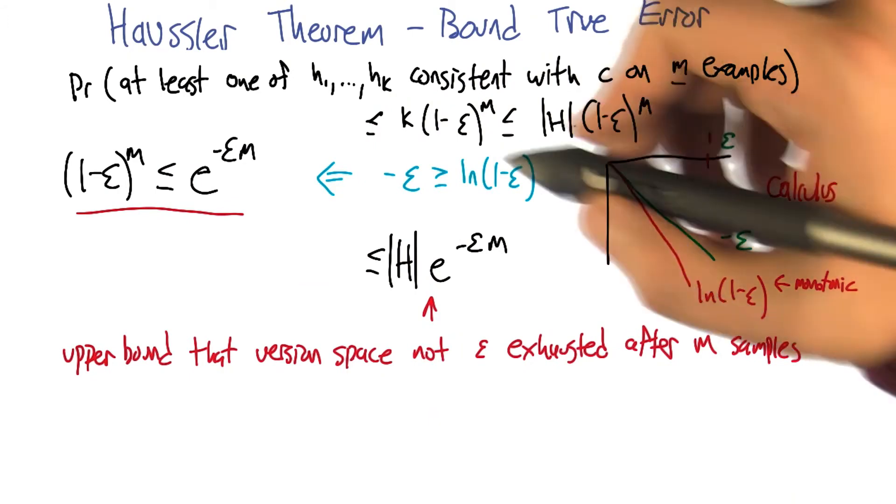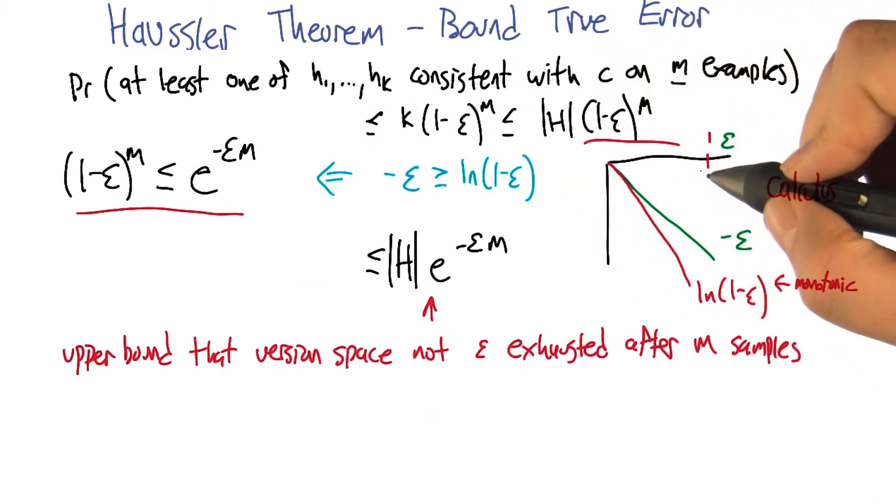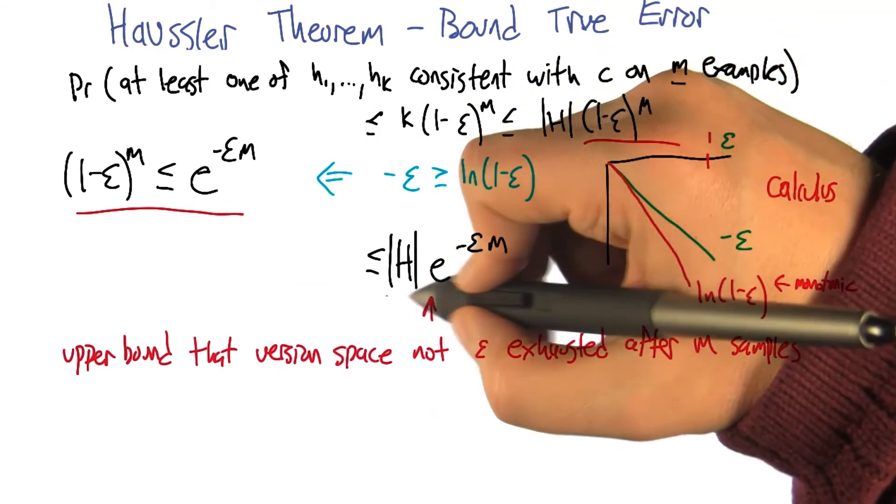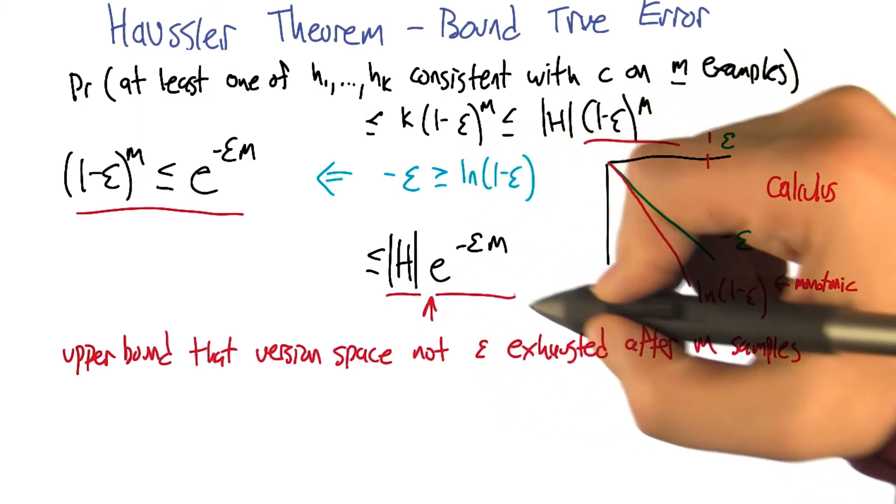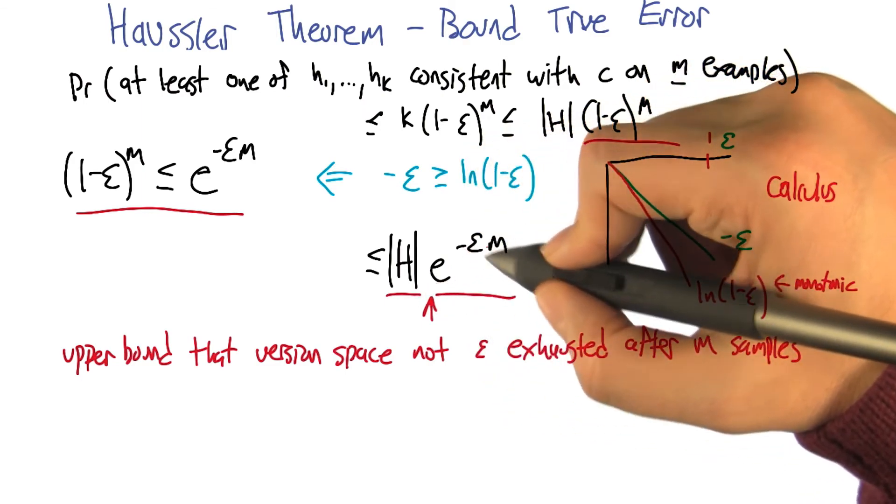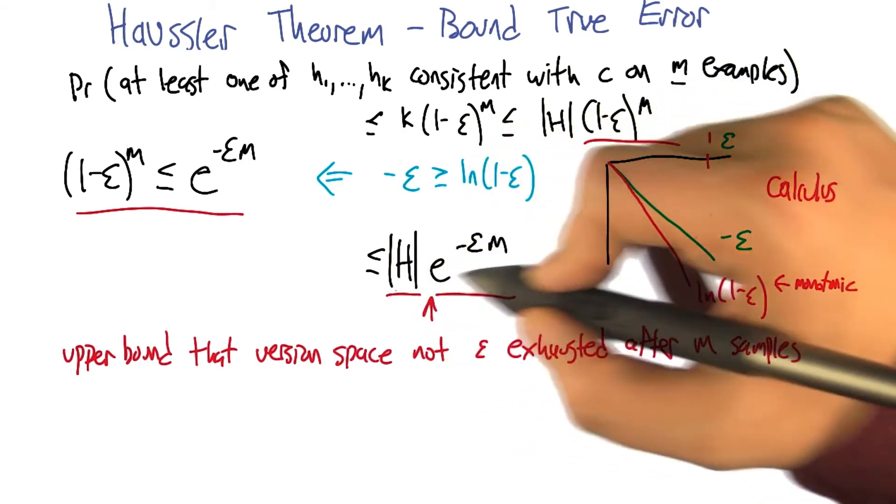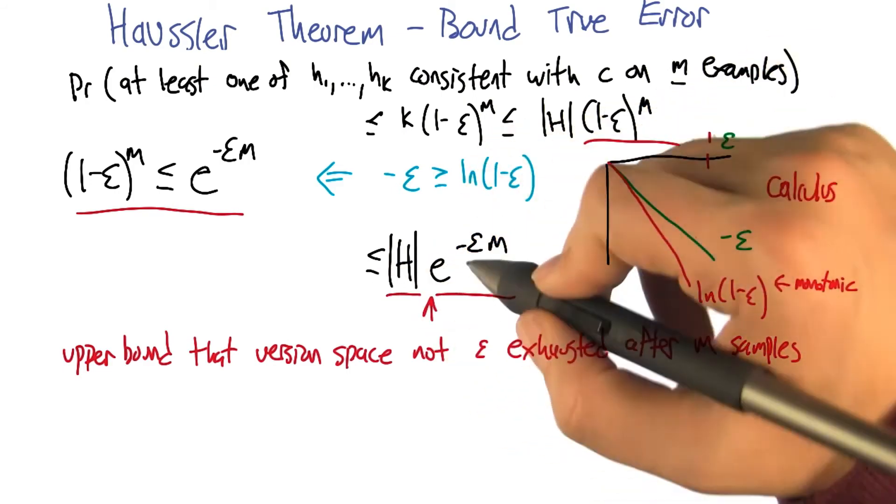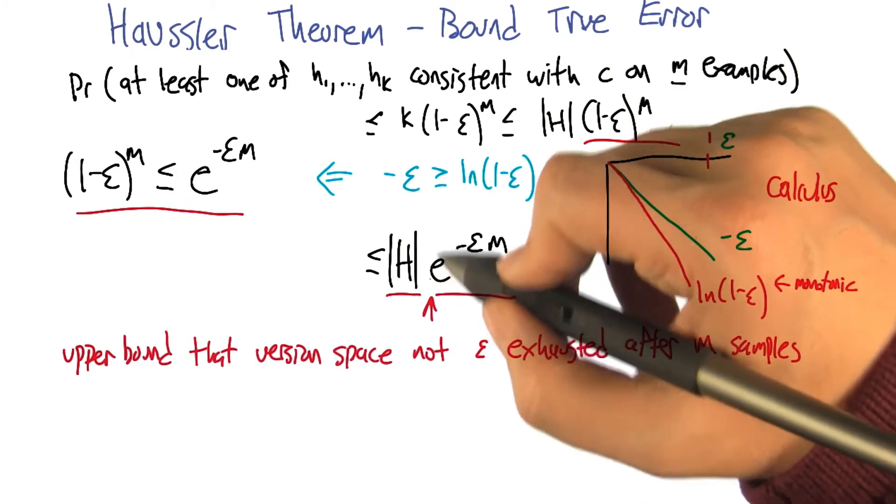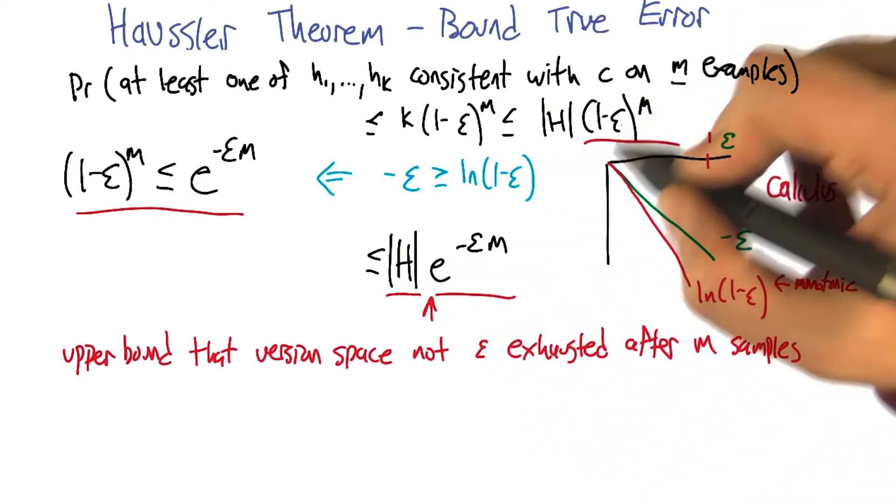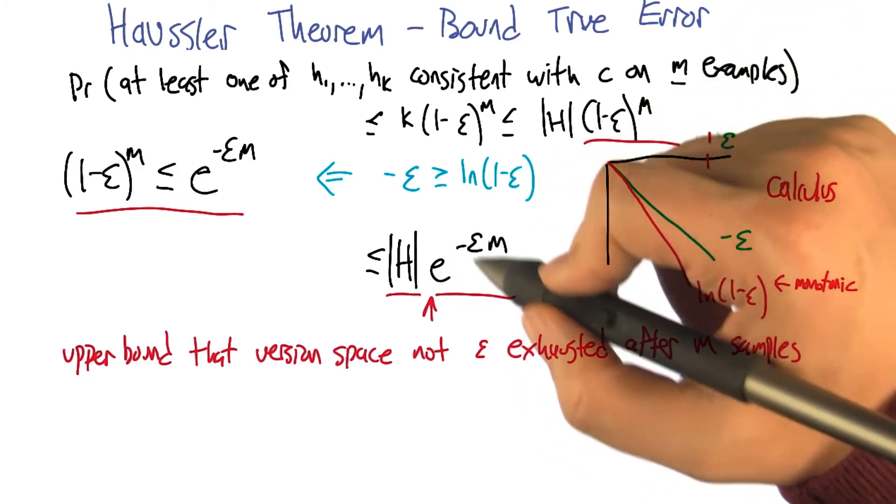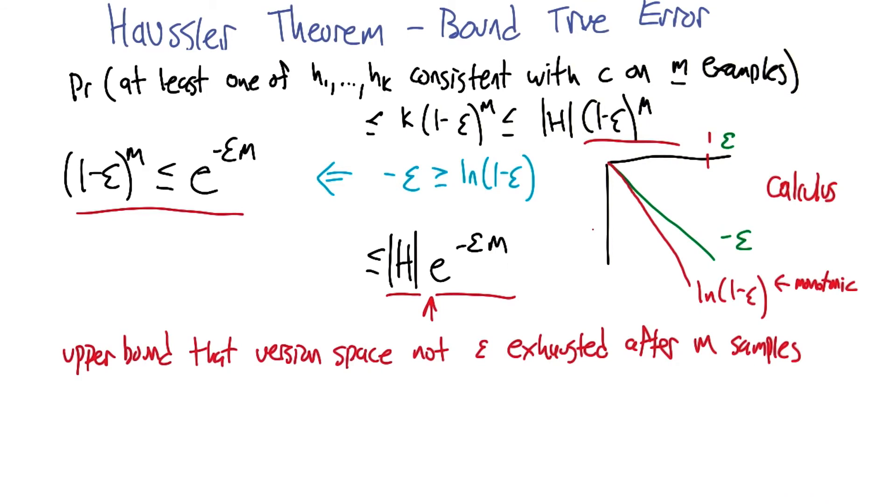So now that we've gotten that, we can use it here in our derivation and rewrite that as the size of the hypothesis space times e to the minus epsilon m. That gives us another upper bound on the quantities that we had before. And this is much more convenient to work with. The epsilon, which had been kind of trapped in the parentheses with the 1 minus, now comes up to the exponent where we can work with it better.